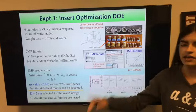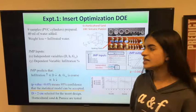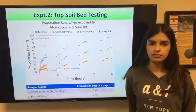The first experiment, which is insert optimization design of experiments, I had 9 samples of PVC cylinders with 40 milliliters of water added to each. For JMP, I input independent variables diameter, height, and grain size, and my dependent variable was the infiltration percentage. What JMP predicted is as the diameter decreases, infiltration increases.